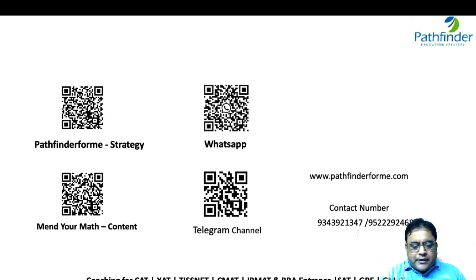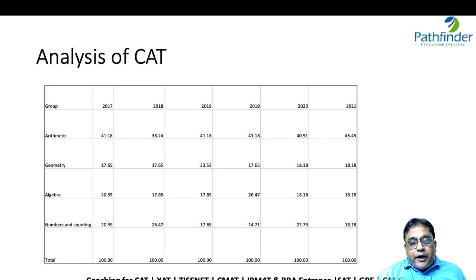Let us get started. The first thing that you should look at once again is the paper pattern. Look at this paper pattern. Arithmetic over the last six years from 2017 to 2021. In fact, we have an analysis for the last 20 years. I'm only sharing this analysis for the last 20 years, what has been asked historically, what have they tested on quantitative aptitude in CAT.